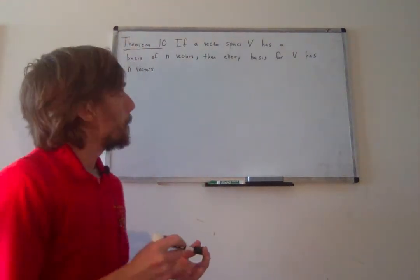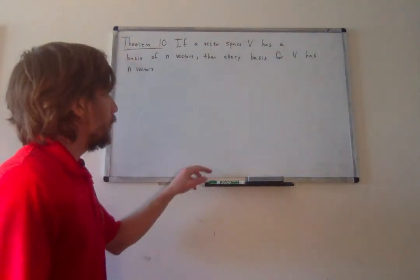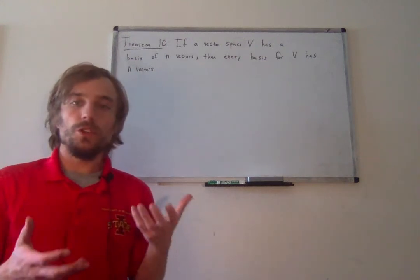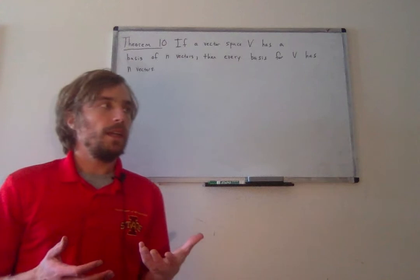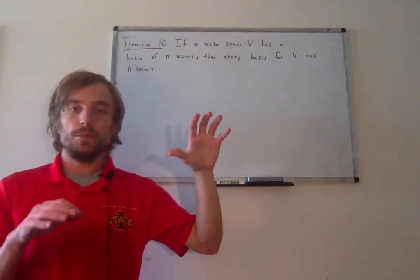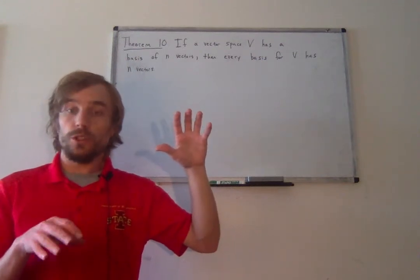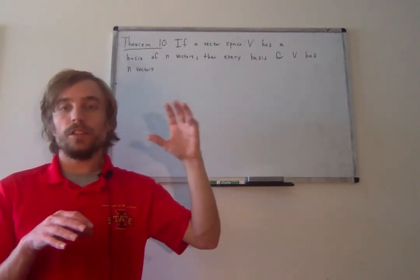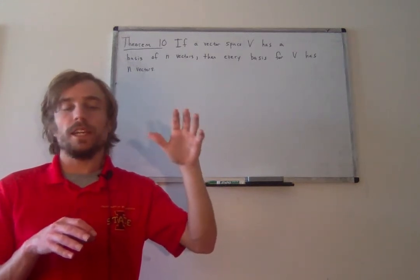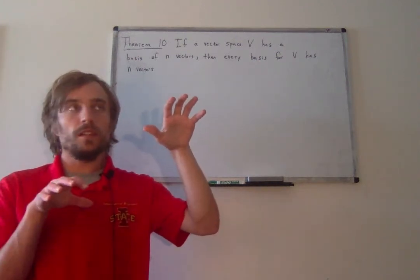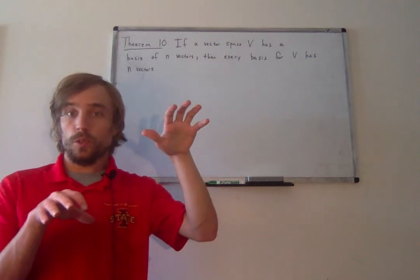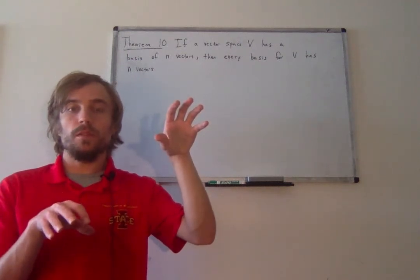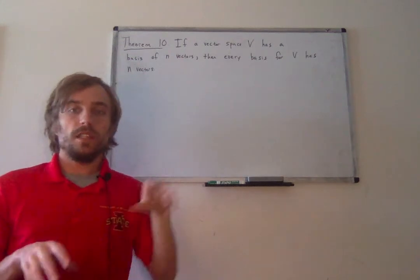This result basically just follows directly from the previous theorem. You can look at two different bases and say: if one basis is bigger than the other, the smaller one couldn't have been a basis because their spans won't be equal. Or if the smaller one is a basis, then the larger set — which might have been a basis — is actually linearly dependent. So if the larger one is a basis, the smaller one can't be, because its span couldn't possibly equal the same span as the larger one.